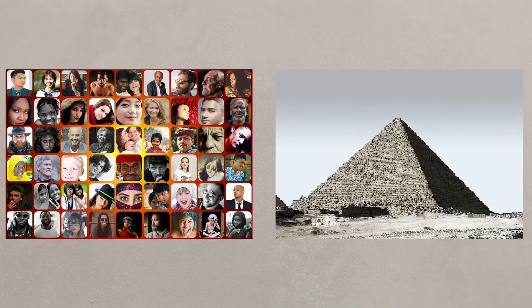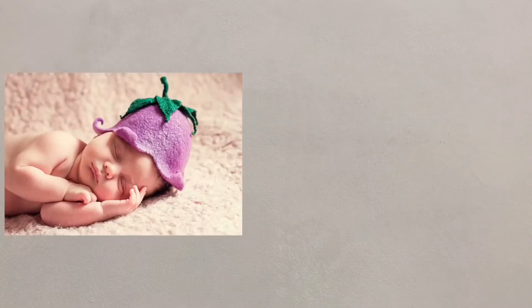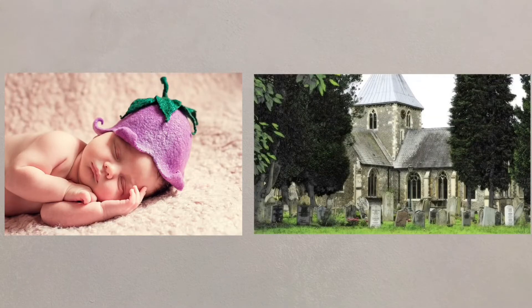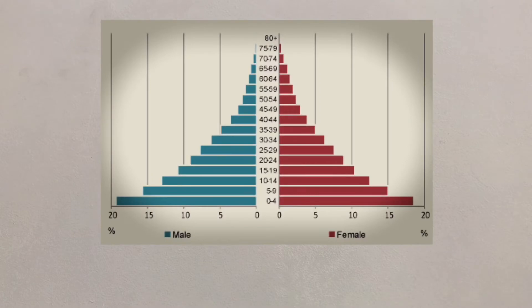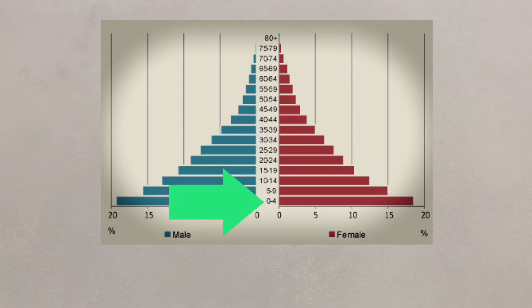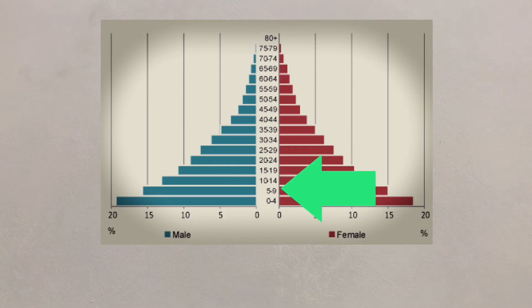Population pyramids are used to look at the structure of a country. This will indicate the number being born as well as how many people are dying, along with how many people are in each age group. Population pyramids look at the number or percentage of females and males in each 5-year age group, from 0 to 4, then 5 to 9, and so on.